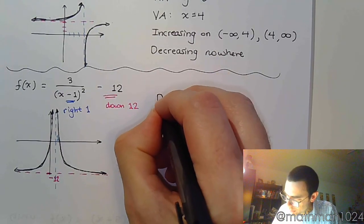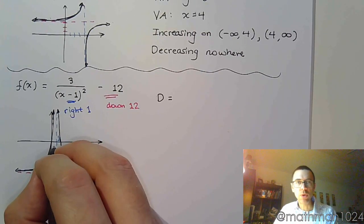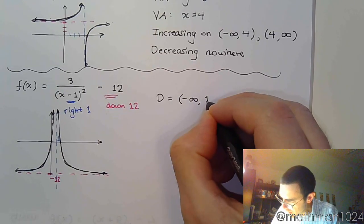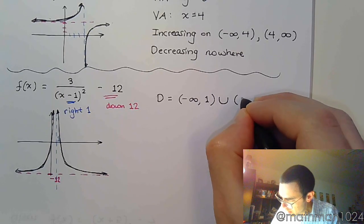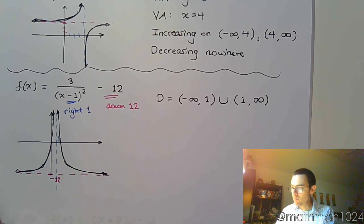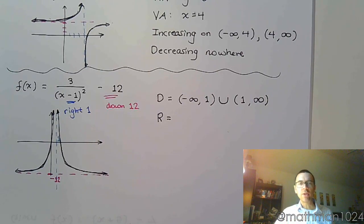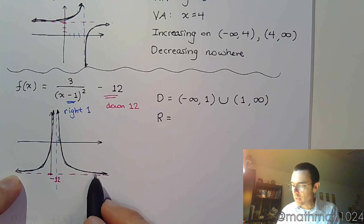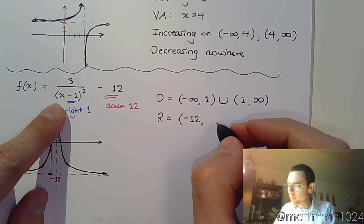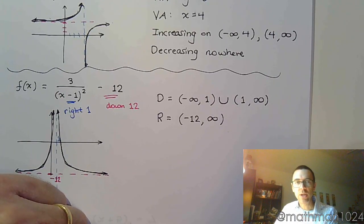Alright, what about your domain? Your domain is everything except for 1, where you have that vertical asymptote. So it's from negative infinity to positive 1, union 1 to infinity. And my range. As I go from bottom to top, what is my range? The lowest I get is almost negative 12, so that's parentheses, negative 12, and then this guy blows up. And he goes all the way up to infinity. So there is our range.